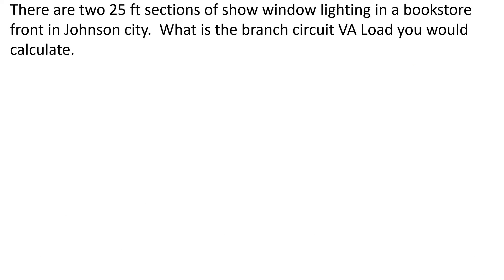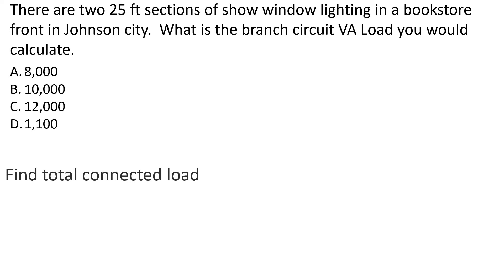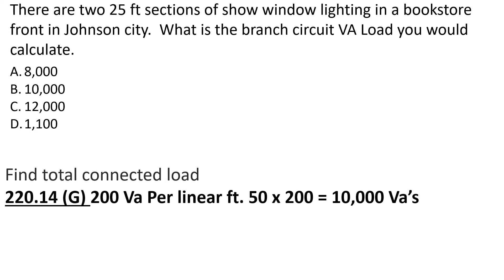There are two 25-foot sections of show window lighting in a bookstore front in Johnson City. What is the branch circuit VA load that you would calculate? Step one: find our total connected load. We're going to head to 220.14G, which lets us know that it's 200 VA per linear foot. We take our 50 feet multiplied by 200 VAs each, giving us a starting connected load of 10,000 VAs.